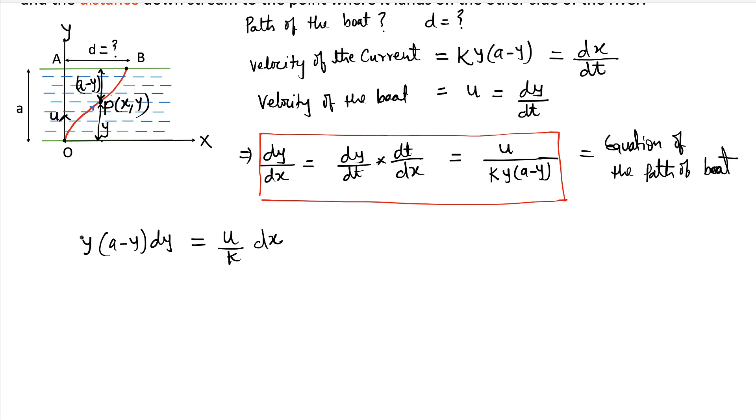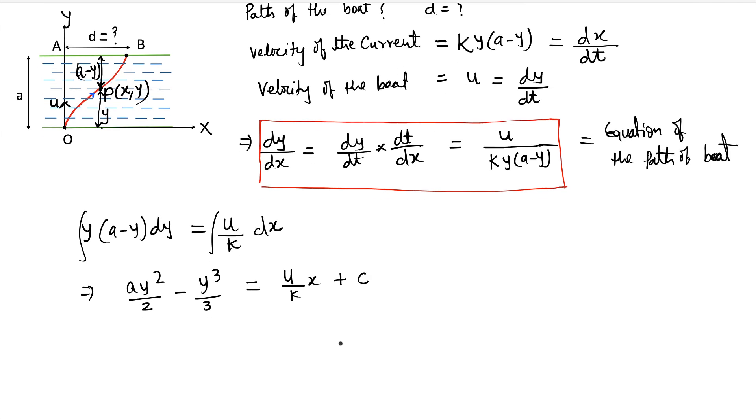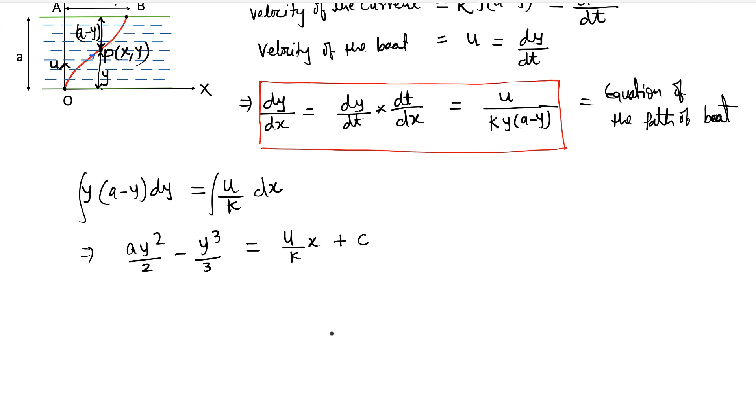Then we'll get ay²/2 minus y³/3 equal to u/K x and some constant C. So we need to find the C also. So that's easy. When x is 0, then we have y also 0. Therefore, we have C also 0.